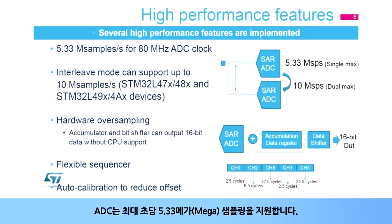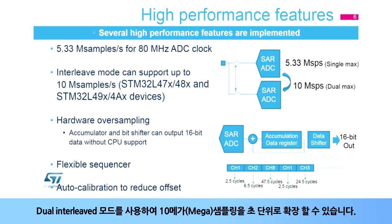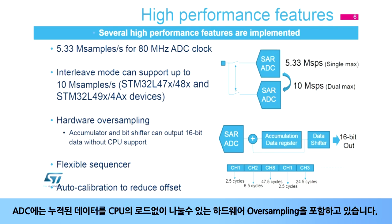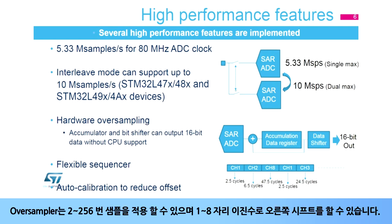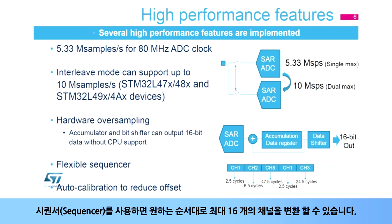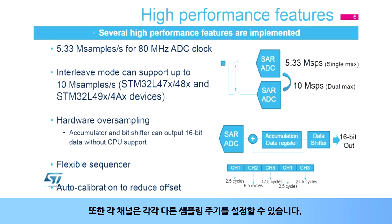The ADC supports up to 5.33 mega samples per second of conversion. By using dual interleaved mode, it can be extended to 10 mega samples per second. The ADC includes oversampling hardware, which accumulates data and then divides without CPU help. The oversampler can accommodate from 2 to 256 times samples and right-shift from 1 to 8 binary digits. The sequencer allows the user to convert up to 16 channels in any desired order, and each channel can have a different sampling period.